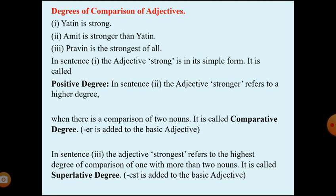A few more examples: 'Yatin is strong' — positive. 'Amit is stronger than Yatin' — comparative. 'Praveen is the strongest of all' — superlative. In the comparative degree, '-er' is added to the basic adjective when comparing two nouns. In the superlative degree, '-est' is added to the basic adjective when comparing one with more than two nouns.